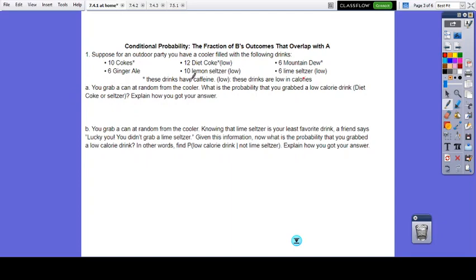So you grab a can at random from the cooler. What's the probability that you grabbed a low calorie drink? So we are finding the probability of low because that's our event. We want to find the probability of that event. So we're going to make a fraction. I always start at the bottom of the fraction, how many do I have total? So I had all of these in my cooler.